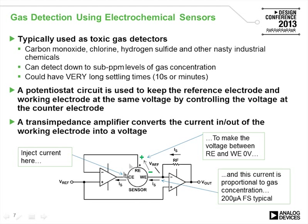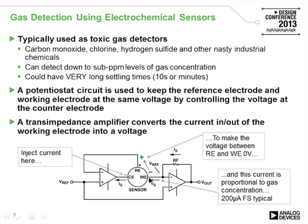The basic sensor is shown here with the conditioning circuitry. The sensor has three electrodes: a reference electrode, a working electrode, and a counter electrode. For the electrochemical action to work properly, the working electrode and the reference electrode must be at the same voltage. We make that happen using a simple feedback loop where we take the output, feed it back into the input, and this forces the counter electrode to the correct voltage, making the summing junction of the amplifier zero.